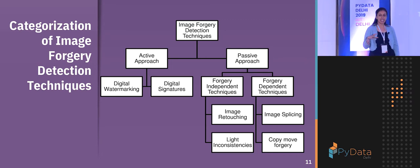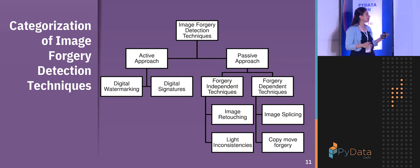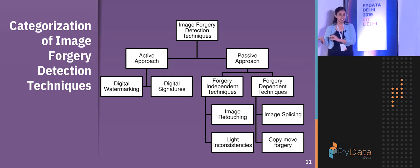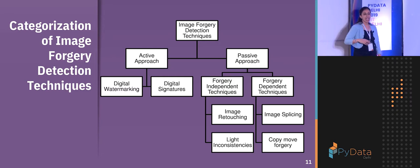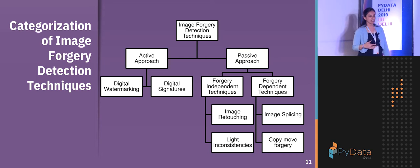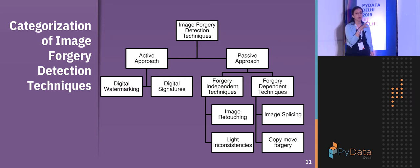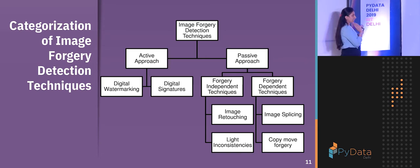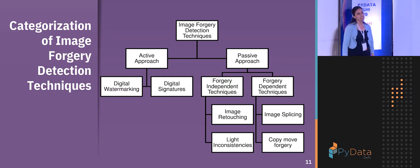In the active approach, we know the specific set of images we need to protect. For example, if I am a photographer with an album of images I want to protect, I use the active approach targeting that particular set. A lot of earlier research was done on digital watermarking and digital signatures, where I embed a watermark into the image. Later, if anyone modifies the image or wants to claim copyright, I can prove ownership easily.